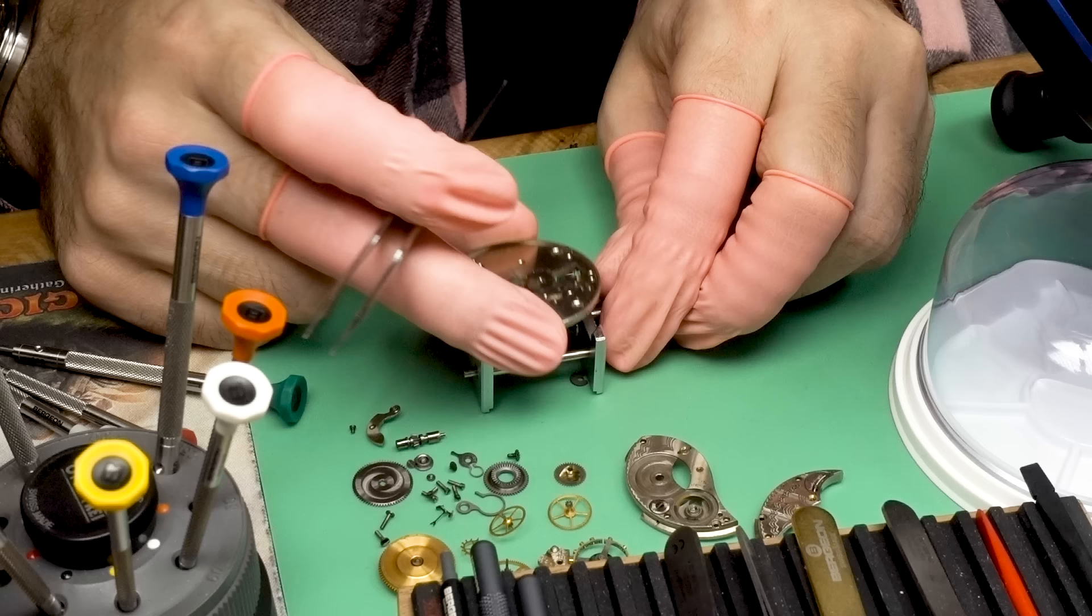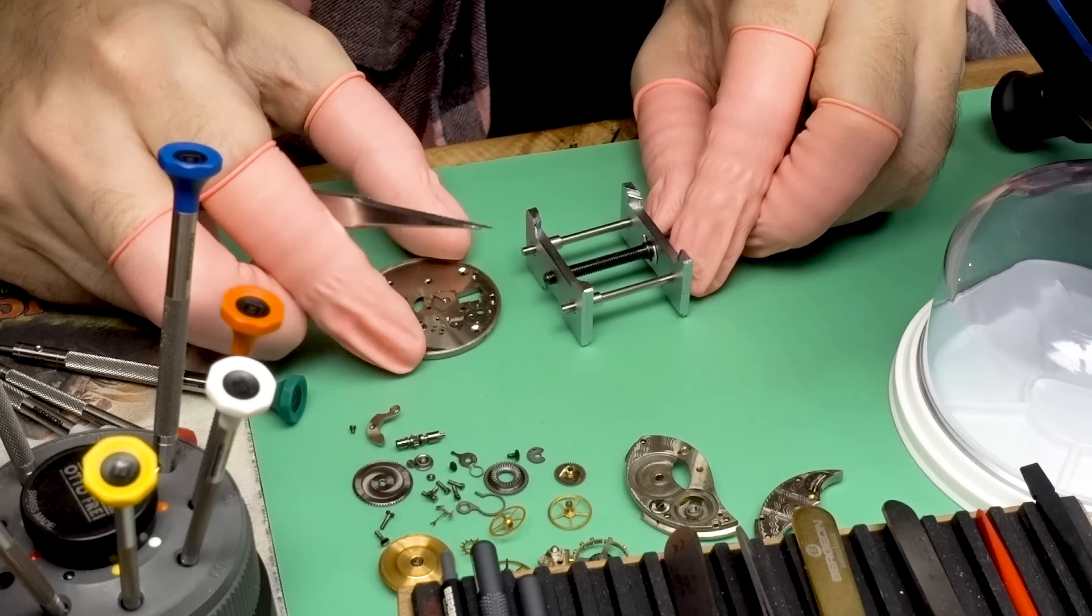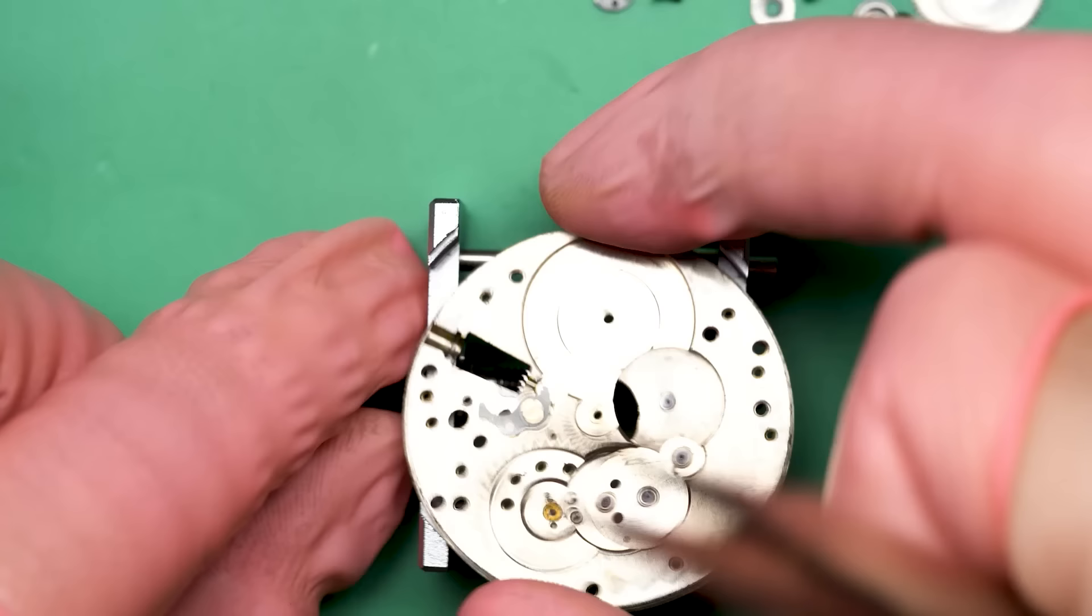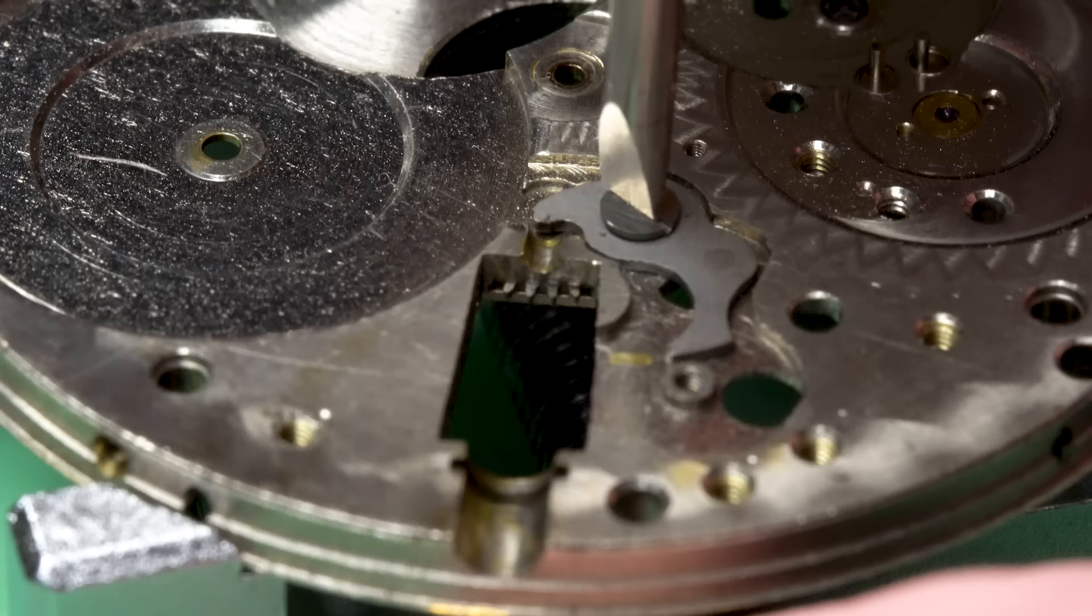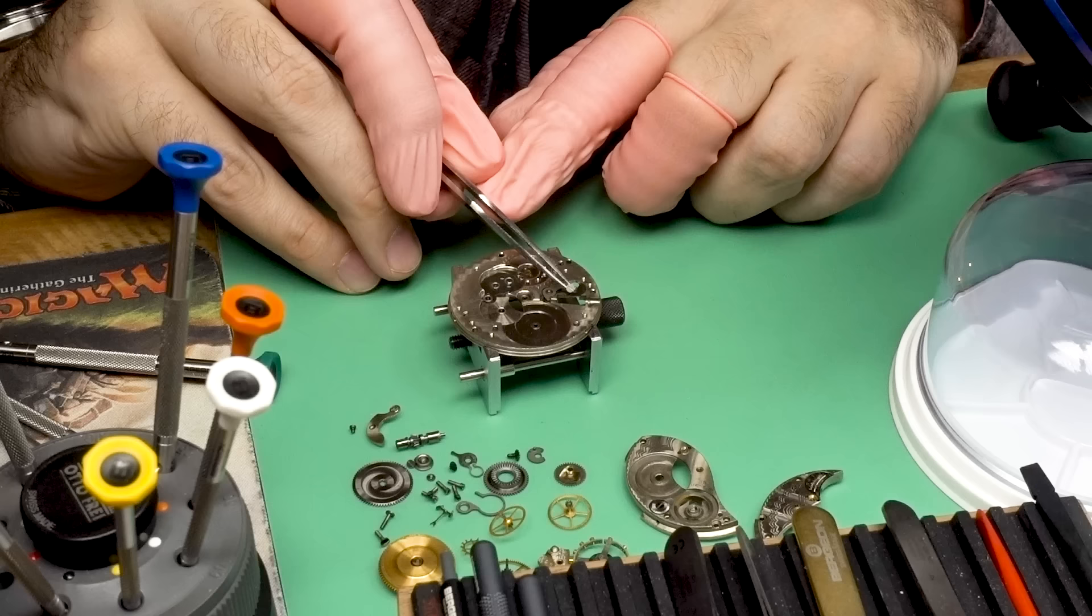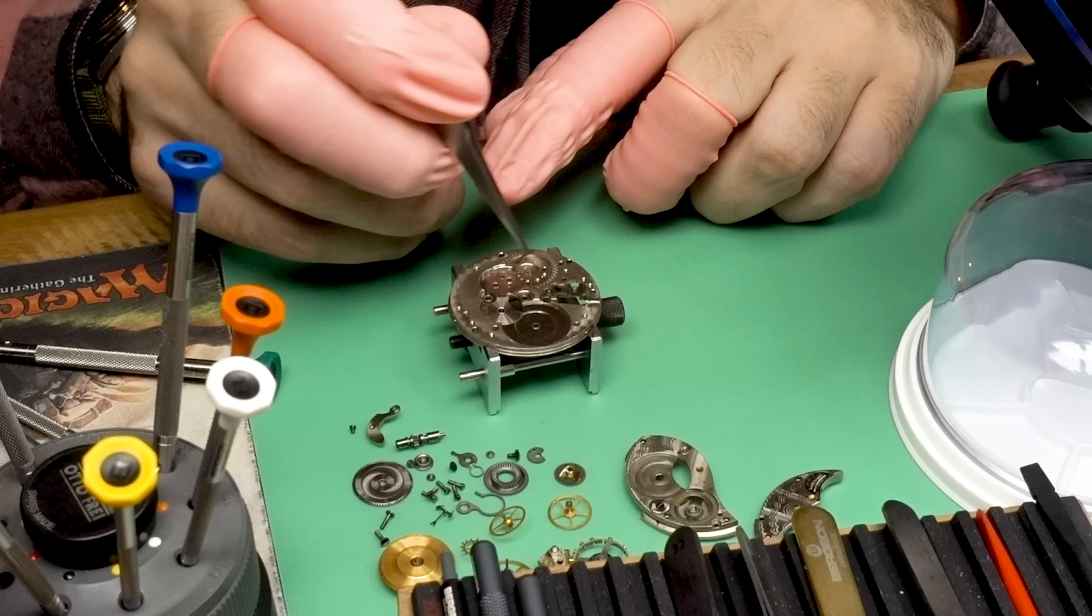And I'll continue with the disassembly. And that should just fall out the bottom. There we go. As you can see, there's one other part here to take off before we've got this movement disassembled.